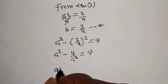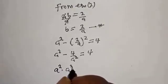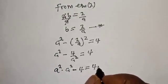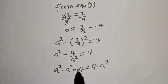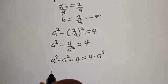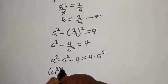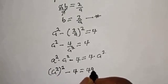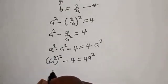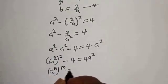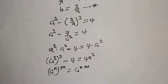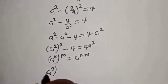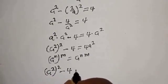Multiplying through by a squared: a squared times a squared minus 4 is equal to 4 times a squared. That gives a to the power 4 minus 4 equals 4a squared. Note that a squared squared equals a to the power 4.